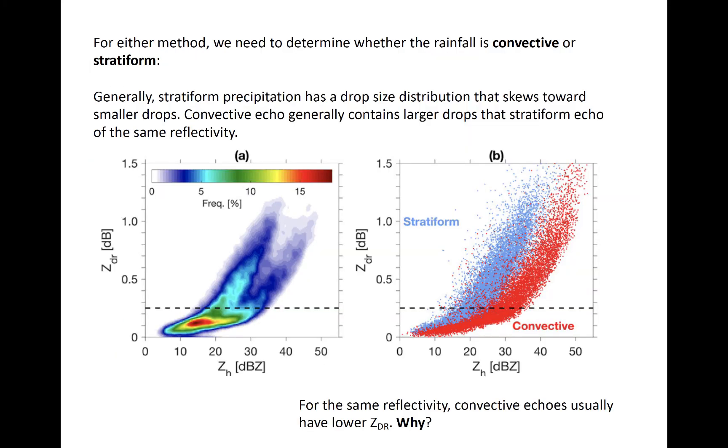Finally, we have mentioned convective and stratiform rainfall at length in this module because the drop size distributions found within two basic types of rainfall differ substantially. The rainfall types can be identified subjectively in radar data, allowing us to apply different rain rate relationships in space.